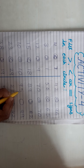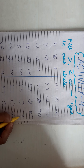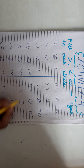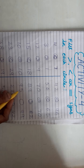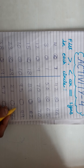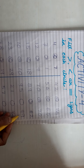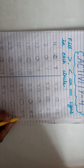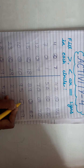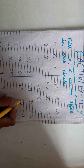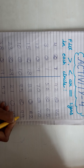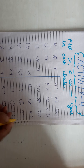देखिए यह है 95 and this is 99. यह 95 है और यह 99। So which number is greater? 99. तो इसे खाएंगे — मुह इसकी दरफ खोलेंगे, ऐसे — यह खुला हुआ पार्ट 99 की दरफ। (So we open the mouth towards 99.)